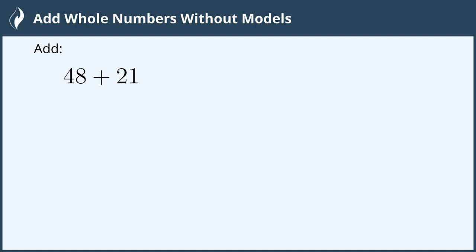Hi everyone! In this video we're going to add whole numbers without models. In this case we're adding the number 48 and 21. To do this I like to stack them because then all of the place values are lined up.